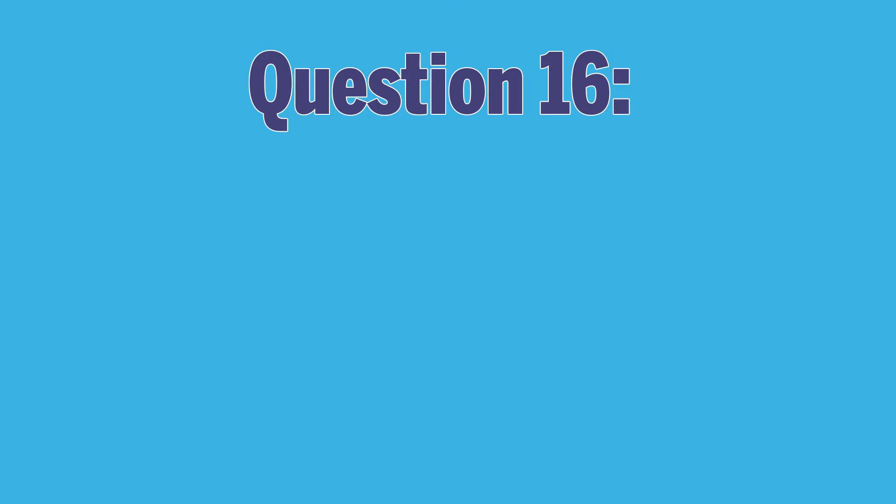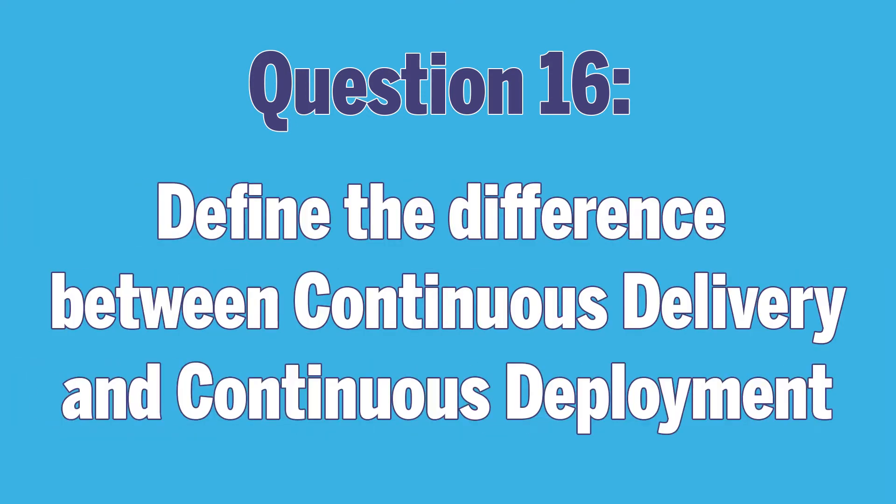Our next question: define the difference between continuous delivery and continuous deployment. It's a subtle line. Continuous delivery is getting code to where it's ready to be delivered to production — all you have to do is hit the deploy button. Continuous deployment is where that button is hit automatically. For some organizations it just doesn't make sense to implement continuous deployment, and you have to decide that on a case-by-case basis. But that's not a prerequisite to implementing DevOps — you can do everything else except clicking the deploy button automatically, and that's totally acceptable.